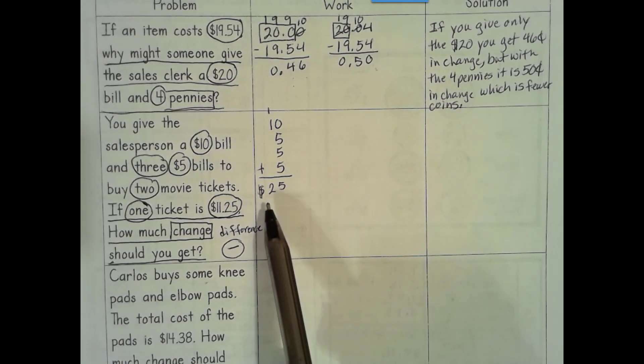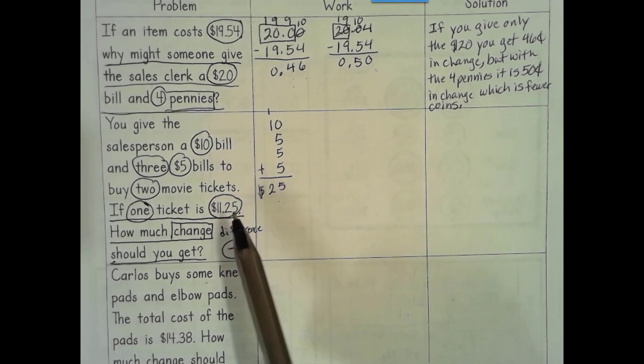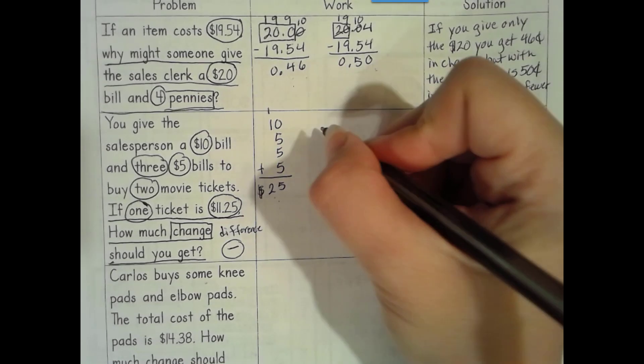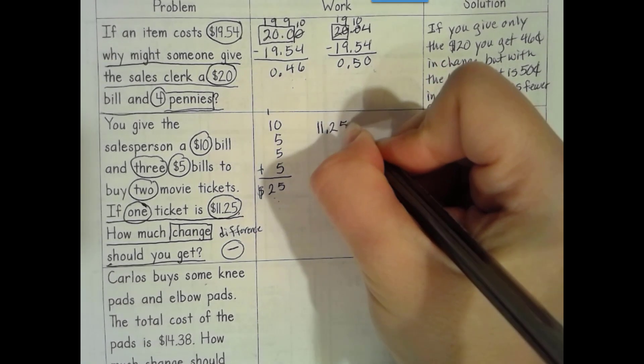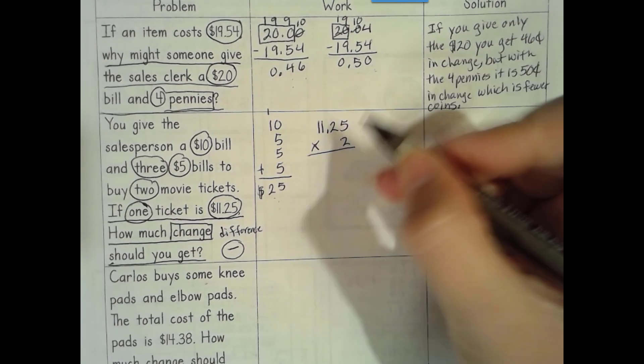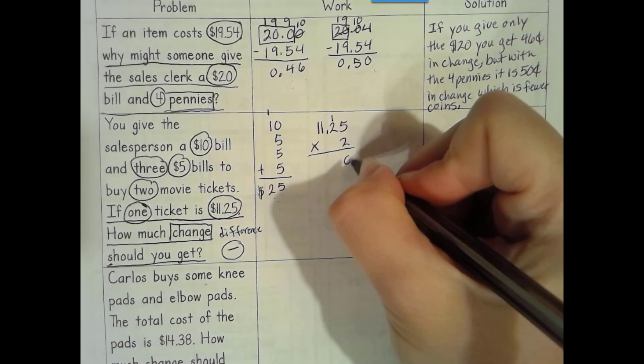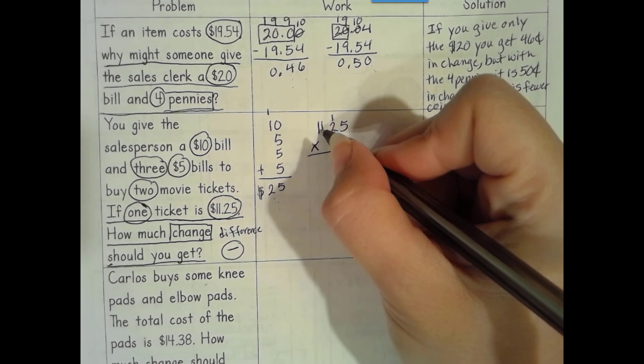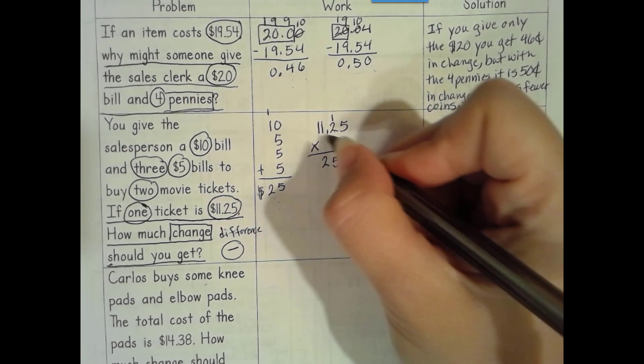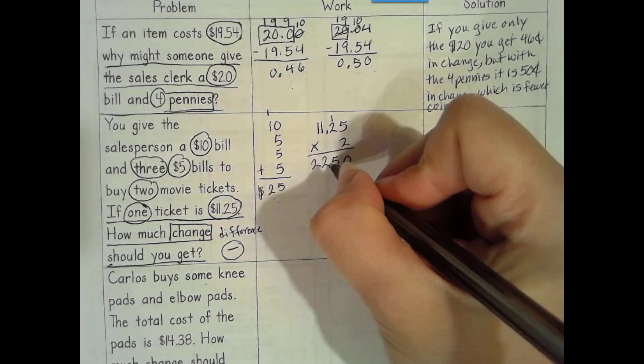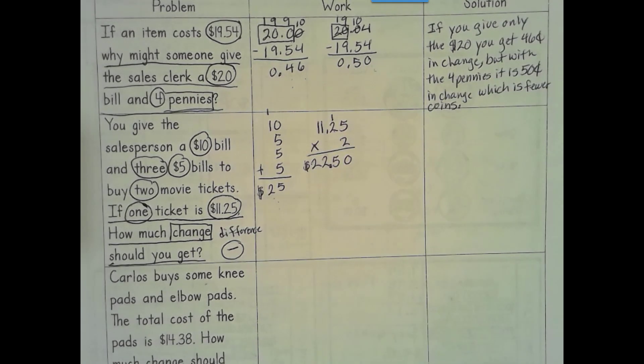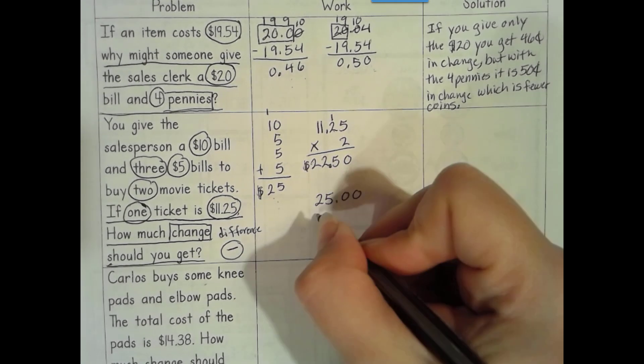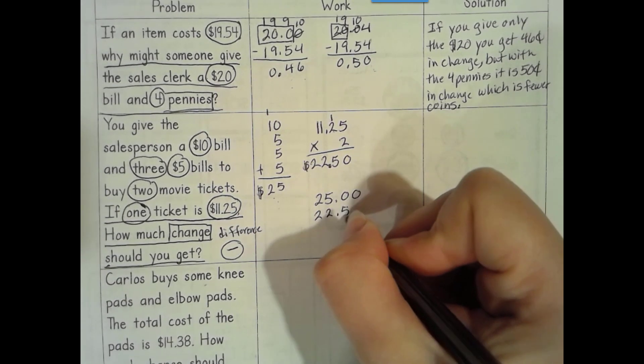So we're going to subtract. So we know how much money we have. We're needing to buy two tickets. So to buy two tickets, two groups of five is 10. Two groups of two is four plus one more is five. Two groups of $1 is $2. Two groups of $10 is $20. So $22.50 is the cost. We have 25 total dollars and we're spending $22.50.